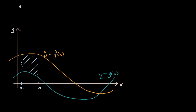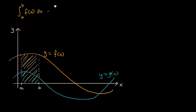One natural thing you might say is: if I were to take the integral from a to b of f of x dx, that would give me the entire area below f of x and above the x-axis. And then if I were to subtract from that this area right over here, which is equal to the definite integral from a to b of g of x dx, then I would net out with the original area that I cared about — this area right over here. And that indeed would be the case.